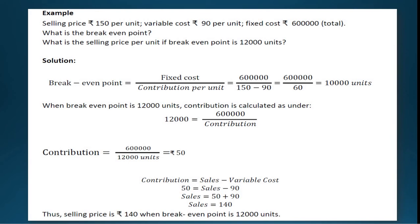First, we will calculate the break-even point. The formula is: BEP = Fixed Cost divided by Contribution per unit. Fixed cost given is Rs. 6 lakhs. Contribution is calculated as Selling Price minus Variable Cost: 150 minus 90 equals 60. So, 6 lakhs divided by 60 gives us 10,000 units as the break-even point.